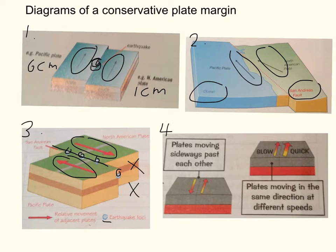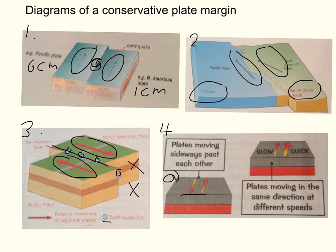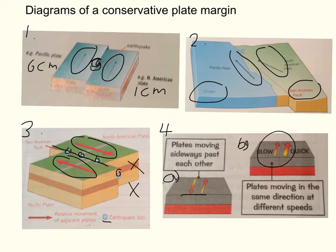The fourth diagram is from the CGP book and has two simple diagrams. Diagram A shows the plates moving sideways past each other — the arrows are going in different directions. Diagram B shows plates moving in the same direction at different speeds. This just shows that the plates can go in the same direction but at different speeds. So these are four diagrams to talk you through and explain how a conservative plate margin forms.